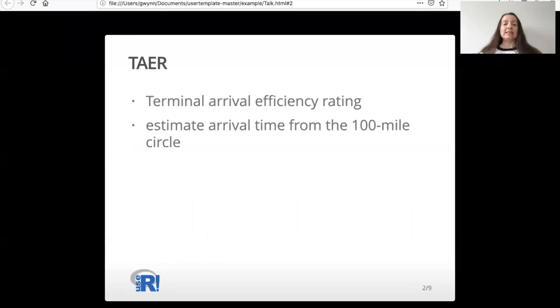I used to work in aviation analytics, and one way that airports know how efficient they are is the Terminal Arrival Efficiency Rating, or TARE. One of the parts of the TARE is that it estimates the arrival time of flights from the 100-mile circle.